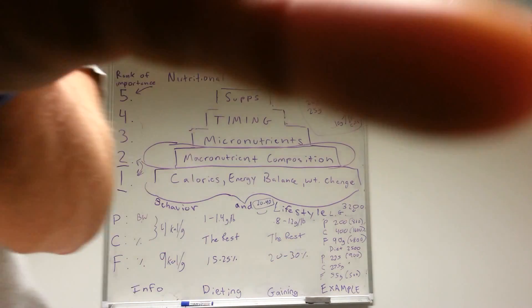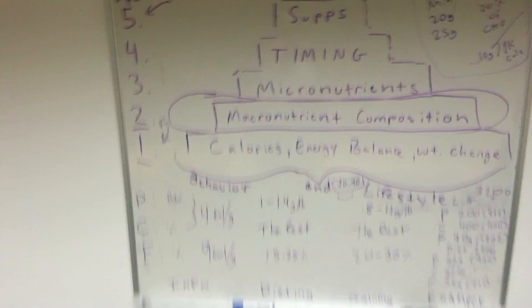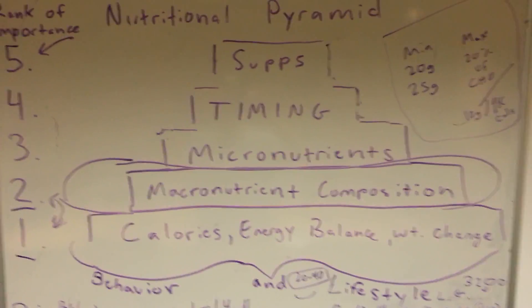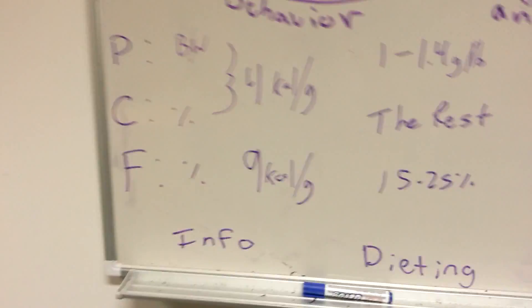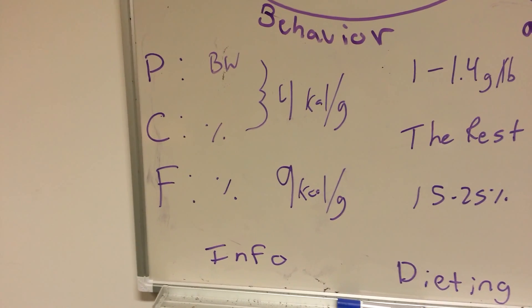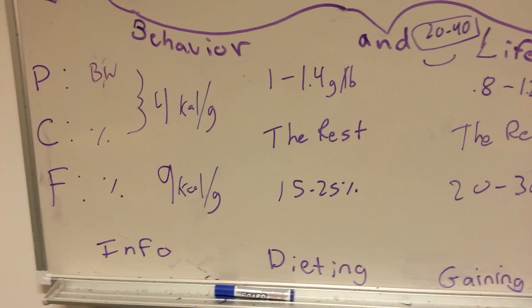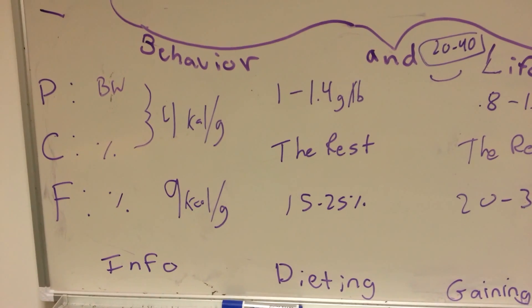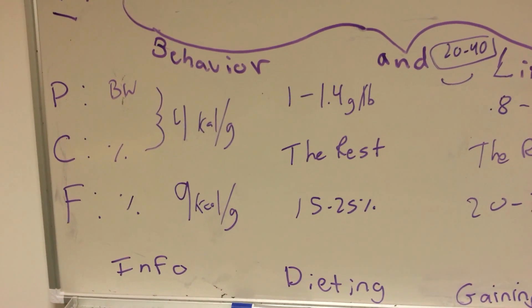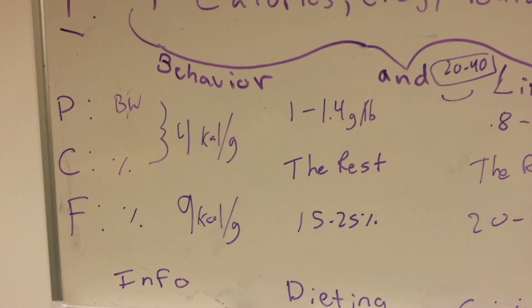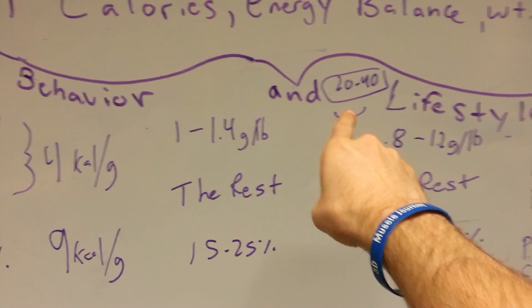And we got our guidelines for everything else. Let's bring it in. So macronutrient composition of the diet, it's going to depend on goal. First we need the info: boom, four calories per gram for protein and carbs, nine calories per gram of fat. When we are dieting, somewhere in the range of 1 to 1.4 grams per pound for protein, 15 to 25 percent for most people for fat, and the rest from carbs.